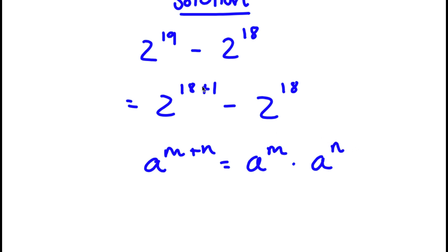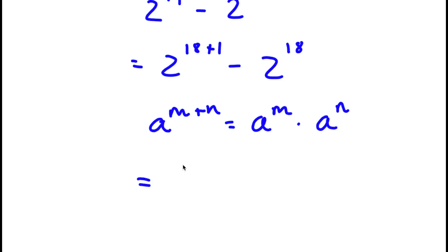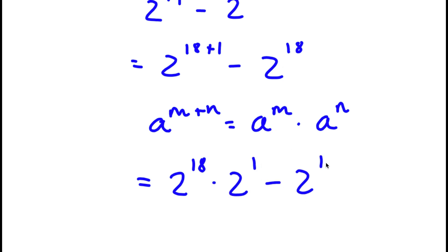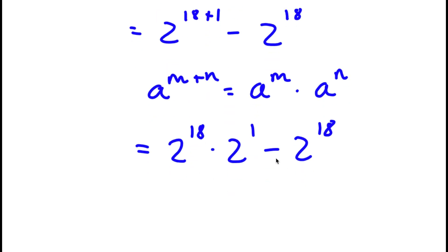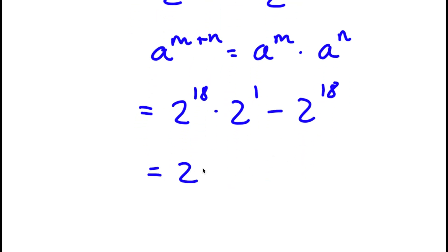So 2 to the power of 18 plus 1 is going to equal 2 to the power of 18 times 2 to the power of 1, and I have minus 2 to the power of 18 at the end. From here, I can go ahead and factor out 2 to the power of 18, giving me 2 to the power of 18 times 2 to the power of 1 minus 1.